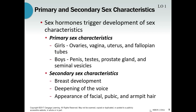Those hormones will in turn signal the testes in boys and the ovaries in girls. The ovaries and testes then release their own set of hormones, which begin to either masculinize the body for boys or feminize the body for girls. This affects different things throughout the body, which we separate into what we call primary sex characteristics and secondary sex characteristics.